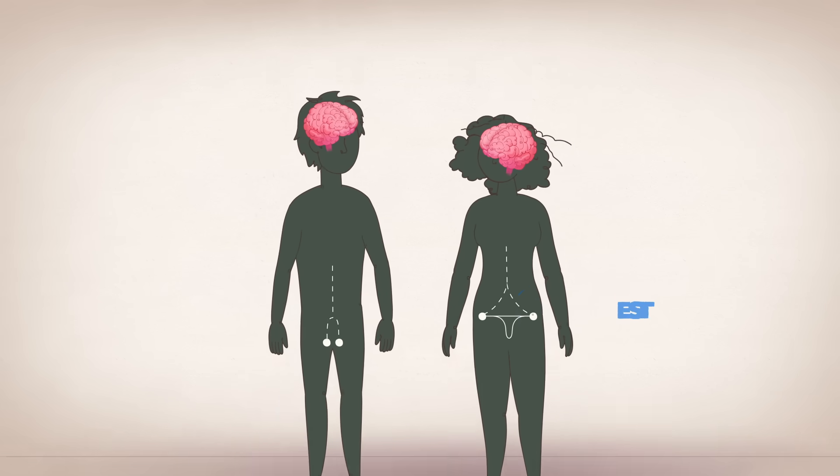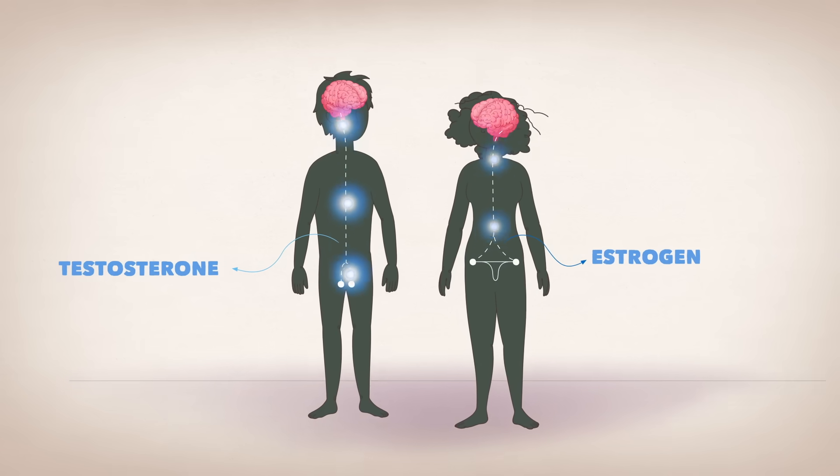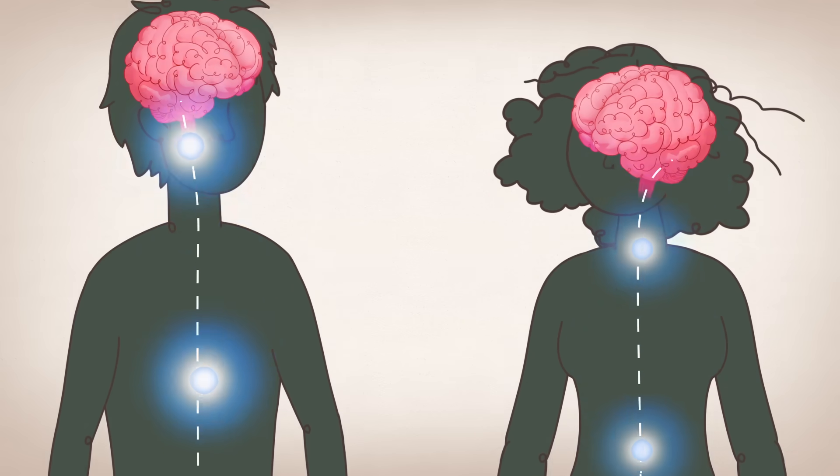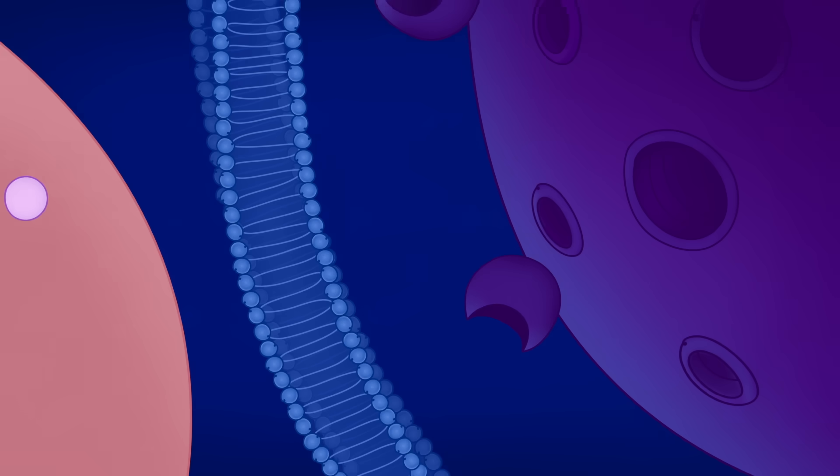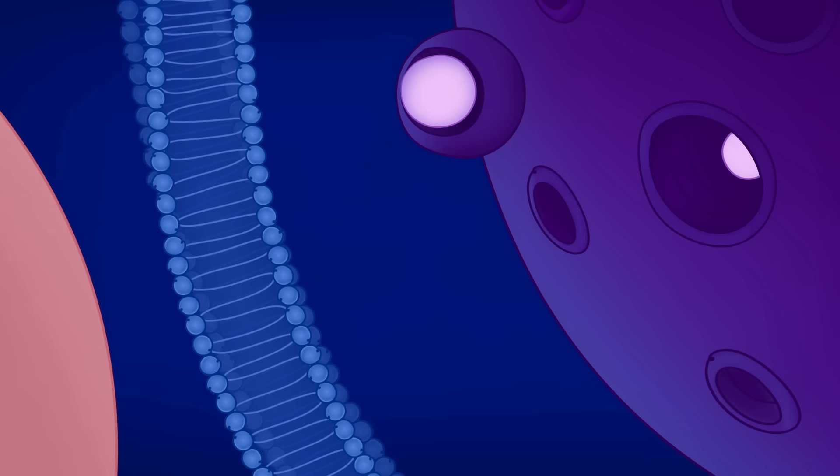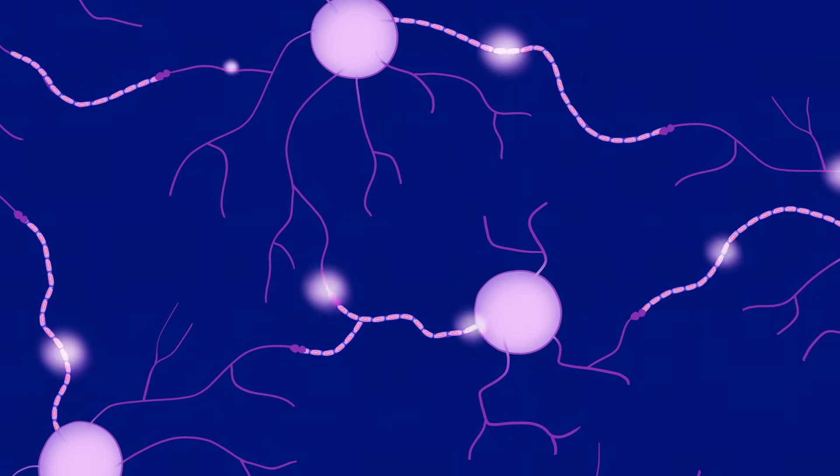thanks to two of puberty's key players, estrogen and testosterone. Produced in the developing testes and ovaries, these hormones hitch a ride to the brain via the bloodstream. Once there, they interact with receptors on neurons, changing the way the individual cells work and function by making them more or less excitable, altering their growth, or reshaping their connections.